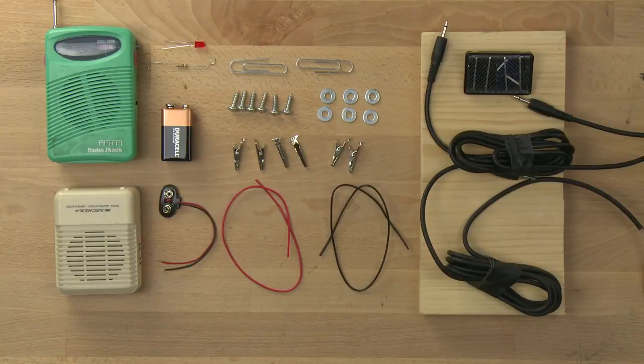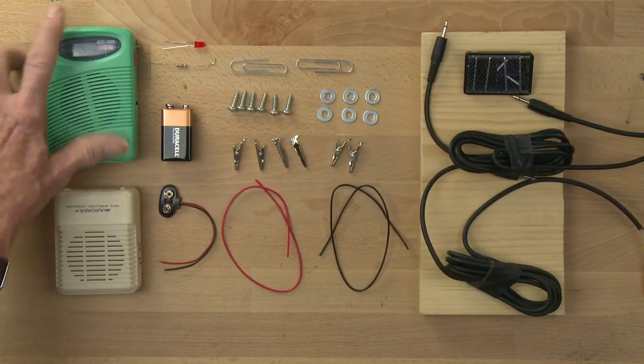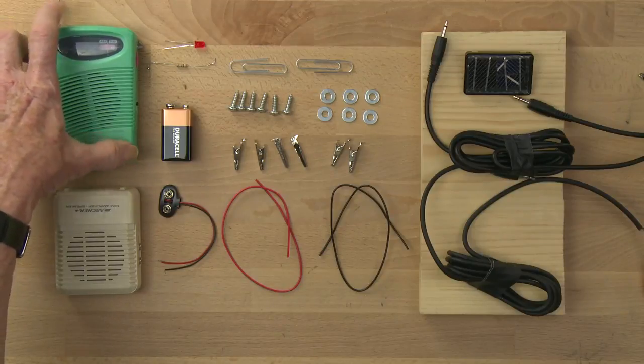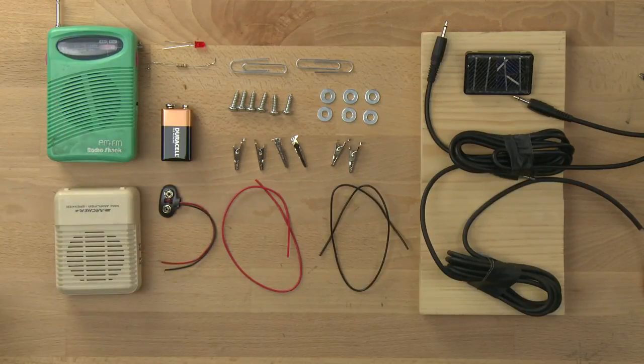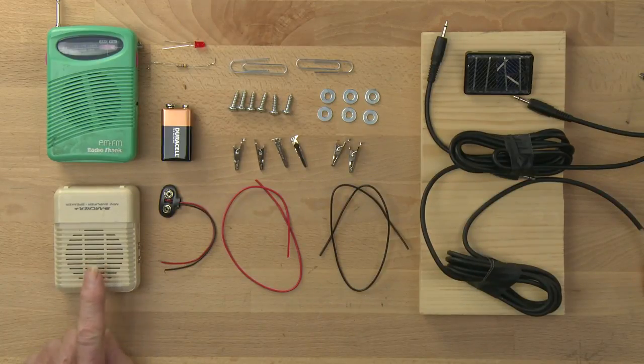To build the sound-to-light-to-sound converter, you'll need a small radio with a phono jack that accepts a 1⅛-inch mini phono plug. You'll also need an amplified speaker that also accepts a 1⅛-inch mini phono jack.